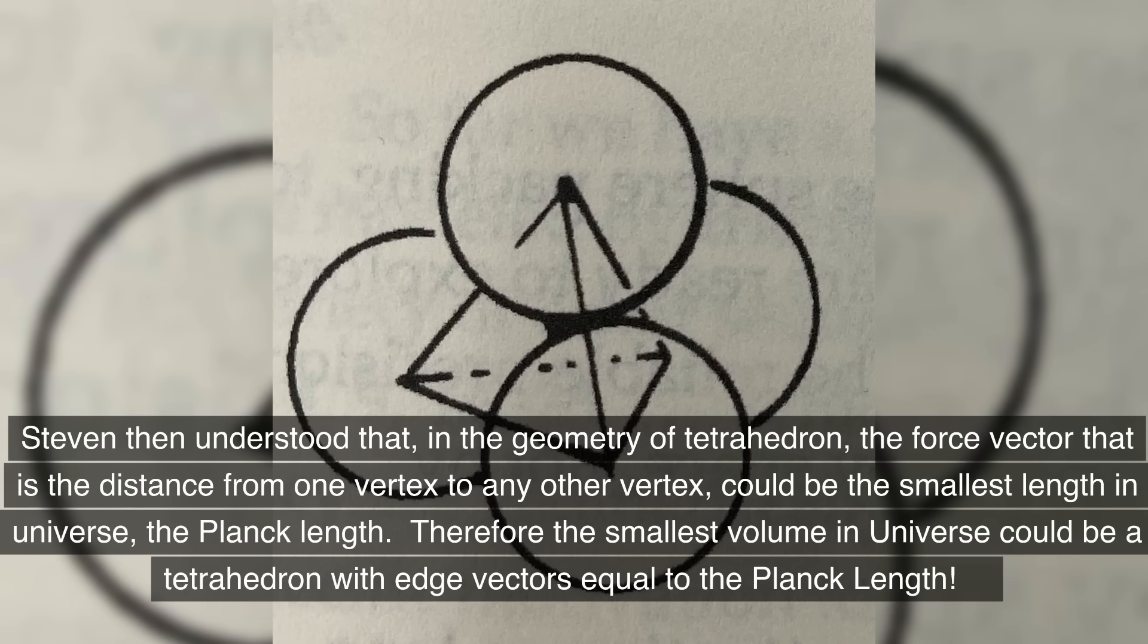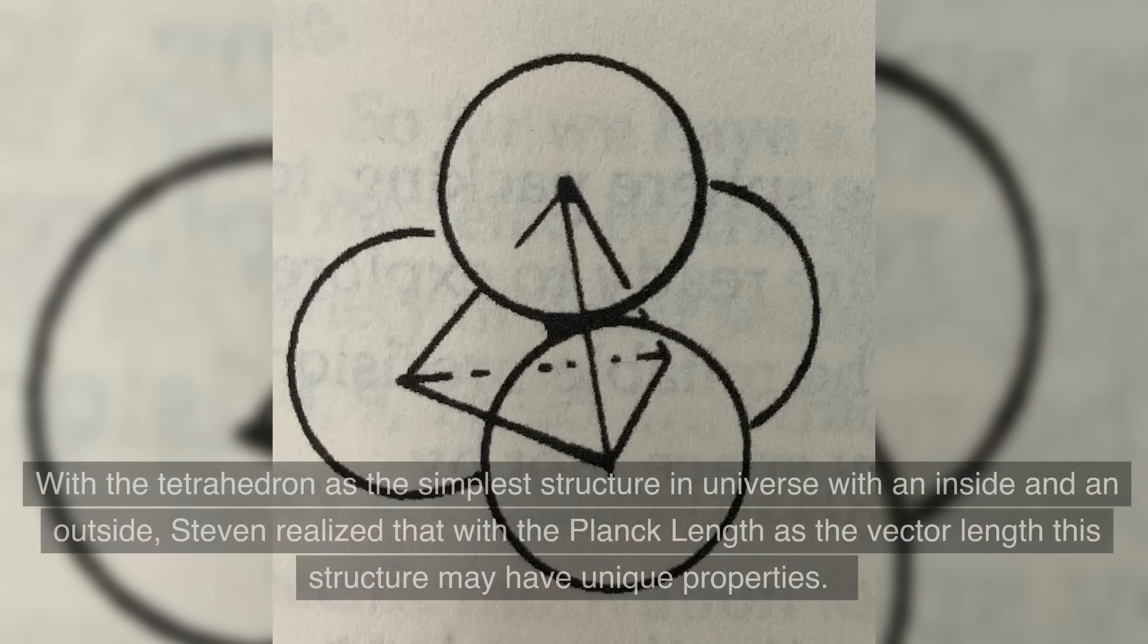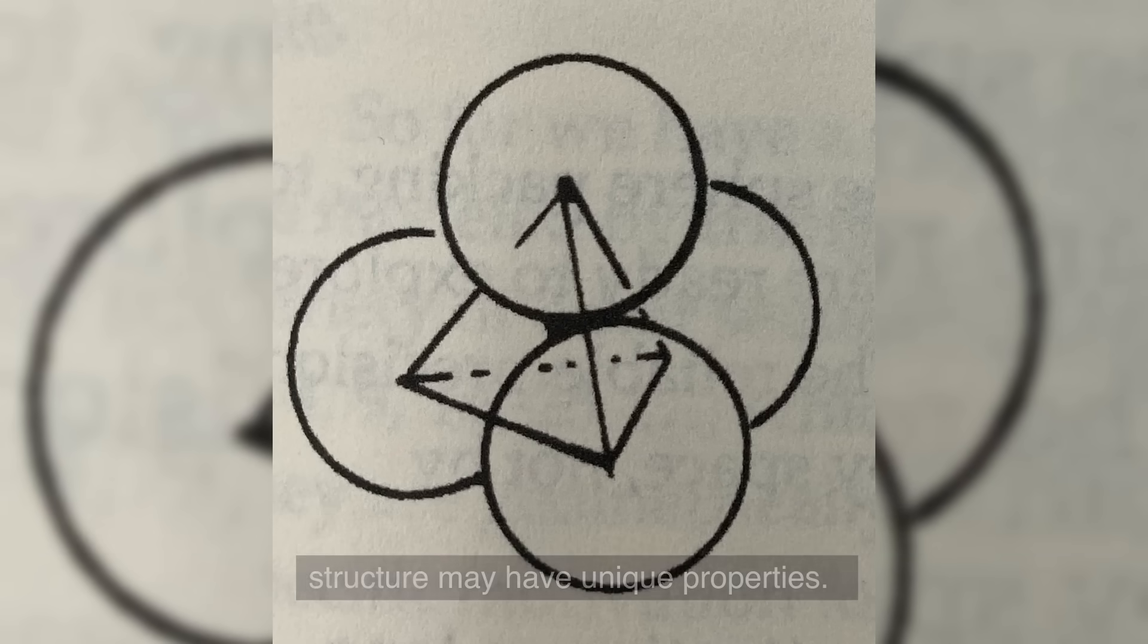Therefore, the smallest volume in universe could be a tetrahedron with edge vectors equal to the Planck length. With the tetrahedron as the simplest structure in universe with an inside and an outside, Stephen realized that with the Planck length as the vector length, this structure may have unique properties.